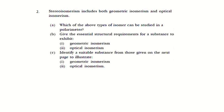Question 2: stereo isomers include both geometrical isomers and optical isomers. Which of these types can be studied in a polarimeter? Optical isomers are the ones that can deflect or change the direction of plane polarized light, so the answer for question 2 part A is optical isomers.